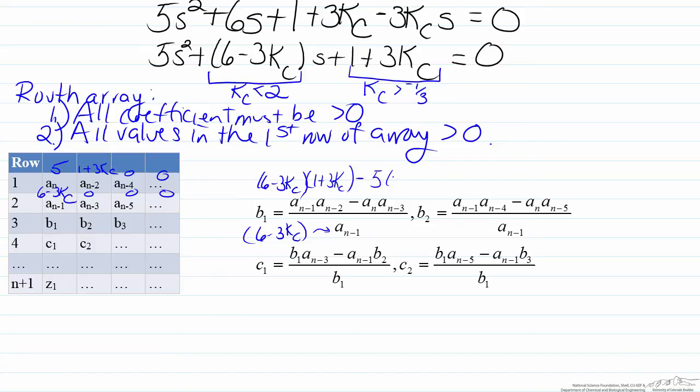but the point to note here is that an minus 3 is 0, so that means that the whole second term is 0, which means the an minus 1 terms will cancel, and therefore b1 is just going to be the same as an minus 2, 1 plus 3Kc. For b2 we note the fact that an minus 4 and an minus 5 are 0,